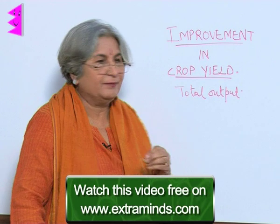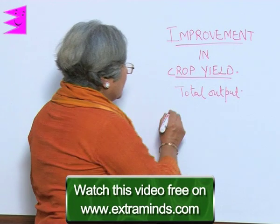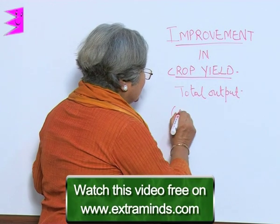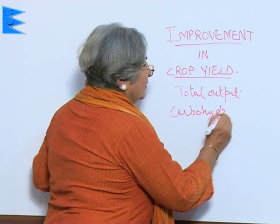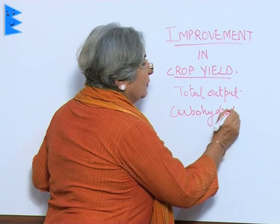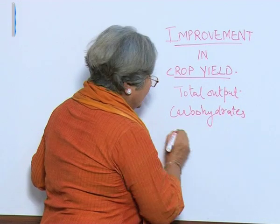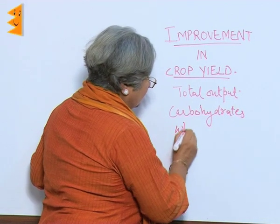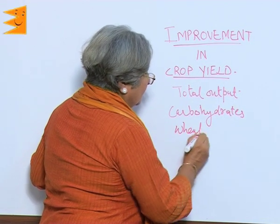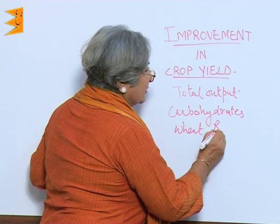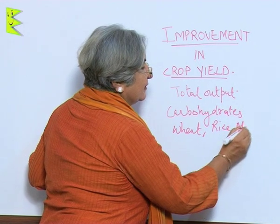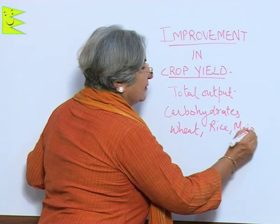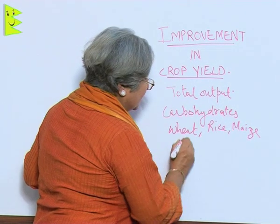For example, for carbohydrates we grow wheat, rice, maize, millet, etc.